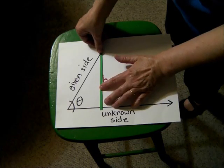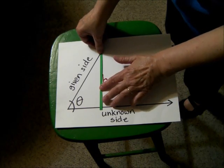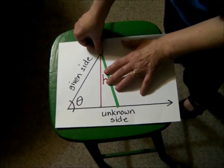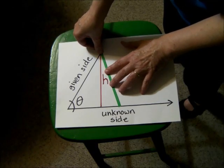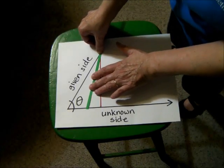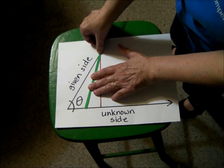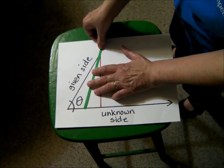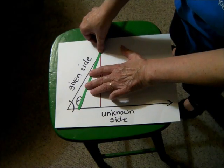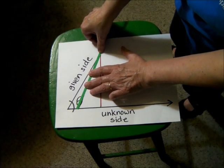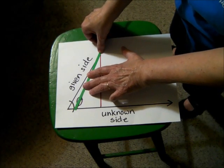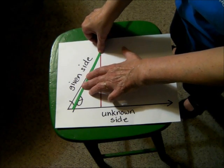What if it's a little longer than the height? Then we can swing it to the right or to the left and draw two different triangles. A little longer, and we still get two triangles, until the opposite side is the same length as the given side.